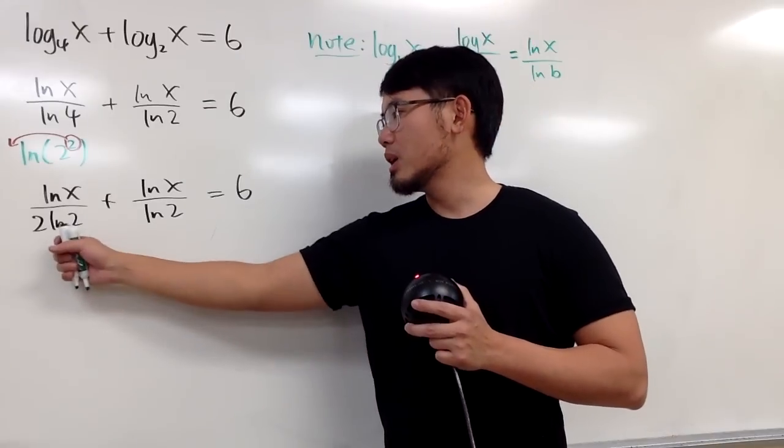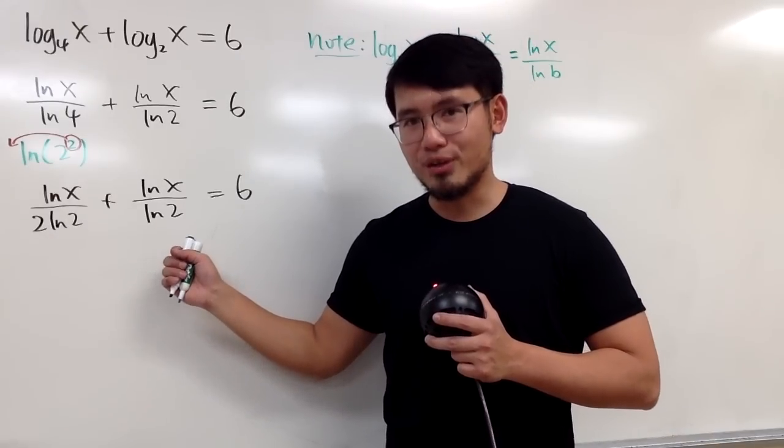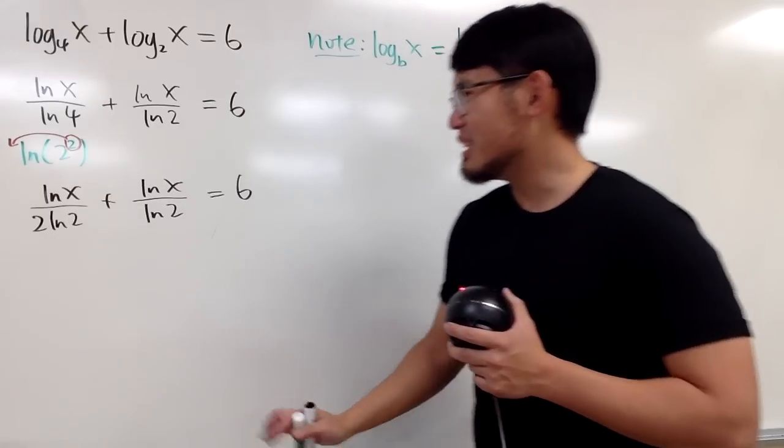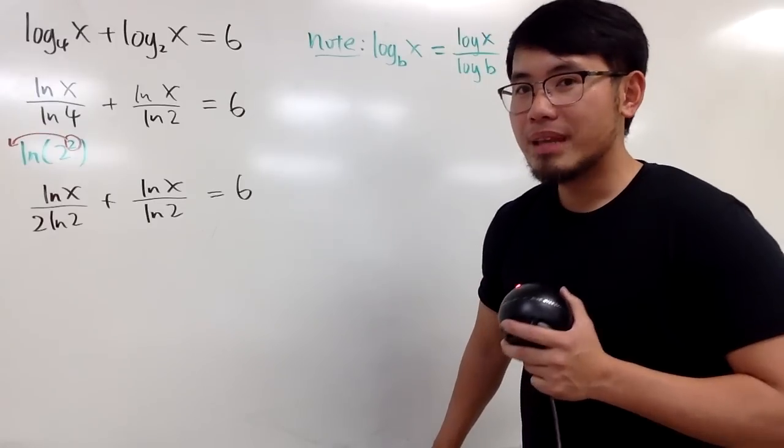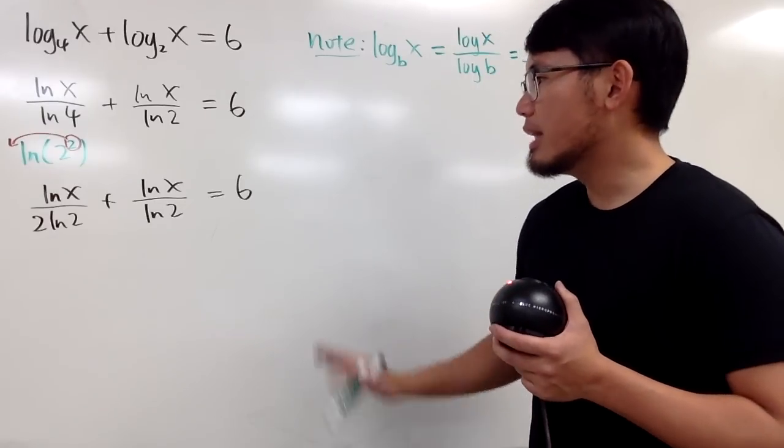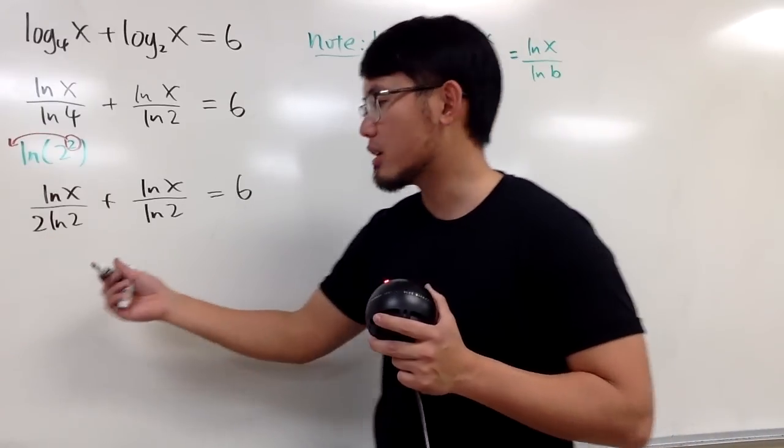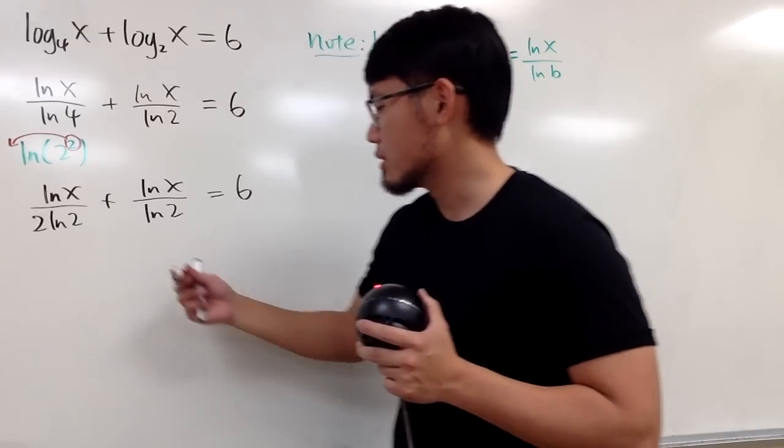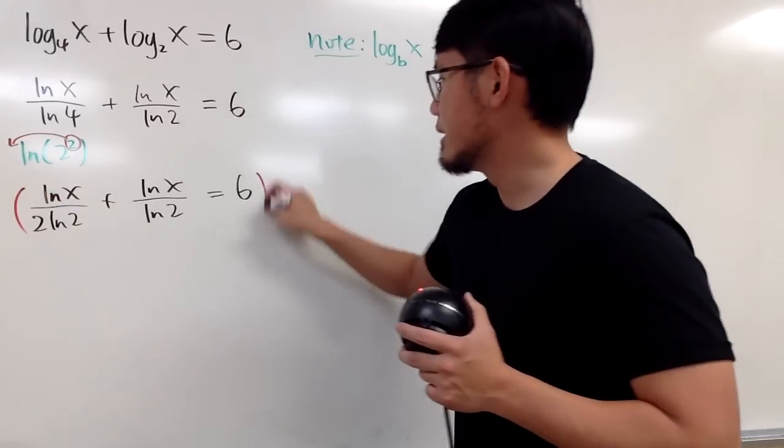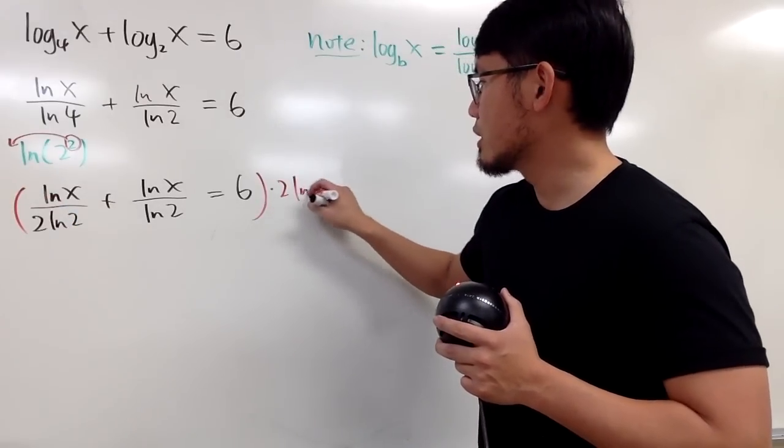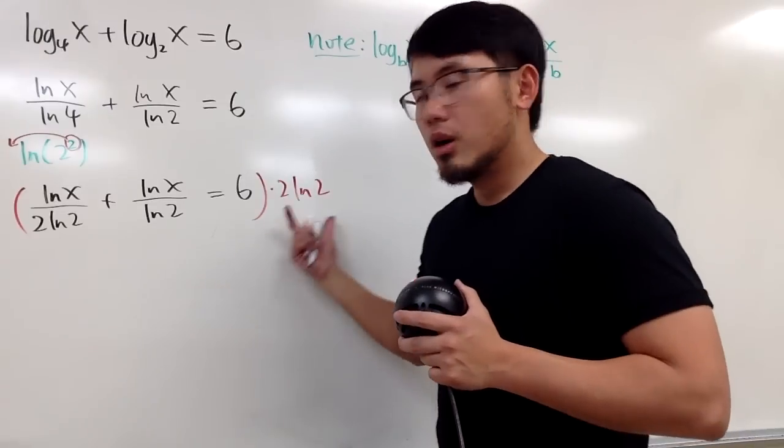So, we are lucky, they both have the natural log of 2 in common. So, this is much more doable. And to finish this up, let's just multiply everybody by the lowest common denominator, namely, 2 natural log of 2. So, let's multiply by 2 natural log of 2.